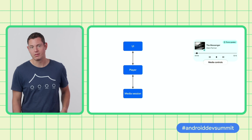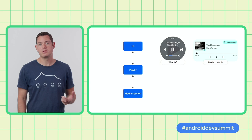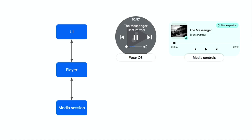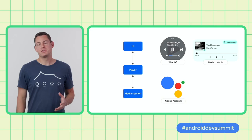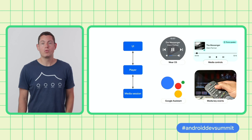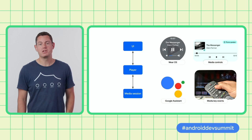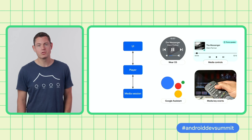Users with Wear OS devices will be able to control your app's playback from their wrist using a media notification. And you can choose for your playback to be controllable from other apps and Google Assistant, so users can use voice commands instead of tapping on a screen. There are other benefits too, like automatic handling of media key events — for example, when using a Bluetooth headset with a play/pause button, or when using a TV remote through HDMI CEC. Creating a media session enables you to provide a better user experience, primarily because it provides users with a convenient way to view and control playback from a number of different contexts.